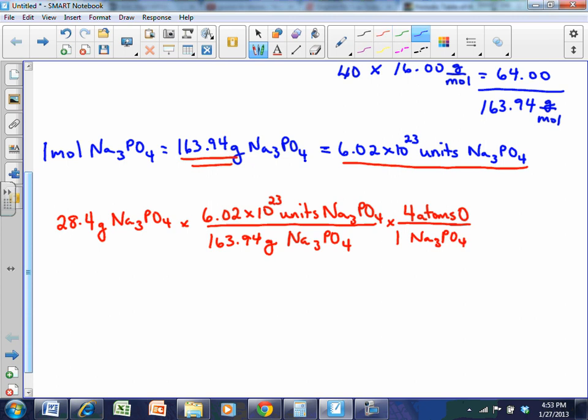And you'll see, factor labeled, grams cancel, units cancel. I didn't write that in for space. And what do I type on the calculator? I type 28.4 times 6.02, and then use your scientific notation, E23 or 10 to the 23 depending on your calculator, divided by 163.94 times 4. And my answer is 4.17 times 10 to the 23rd atoms of O.